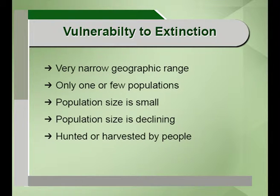If a species has only one or few populations, it is more vulnerable because any disease outbreak, earthquake, or other disturbance from humans will lead to species elimination. Species with small population sizes are also more at risk of extinction because of genetic drift, inbreeding depression, outbreeding depression, and less evolutionary flexibility. Species whose population size is declining due to threats, and species that are hunted or harvested by people — if those pressures are not removed — are very much vulnerable to extinction.